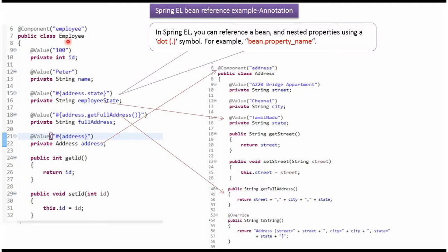Here I have defined the class Employee, and it has five properties. ID value will be injected as 100, and Name value will be injected as Peter.